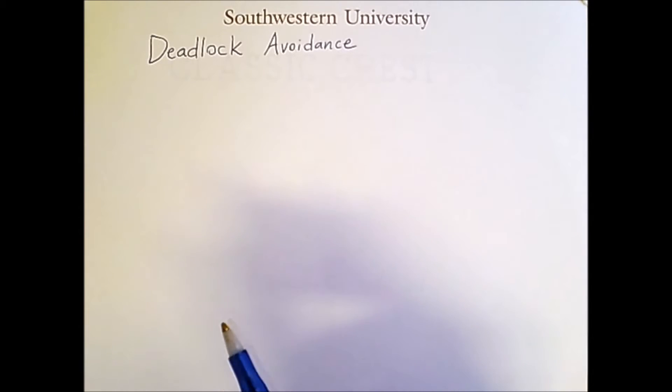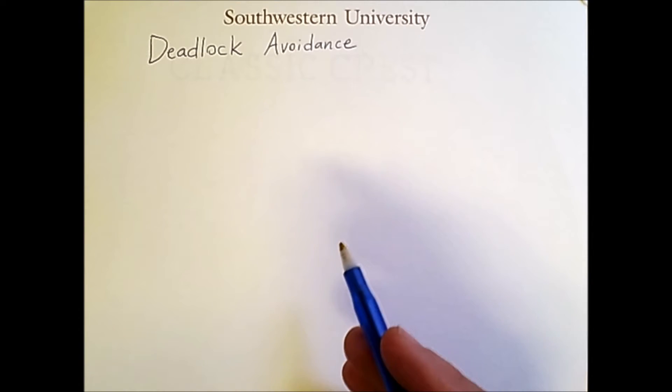If we disallow one of the three conditions that make deadlock possible, then that will prevent deadlock from ever occurring. So if mutual exclusion, no preemption, or hold and wait is simply not possible, then we'll never have deadlock.